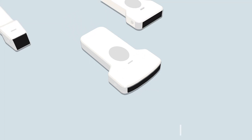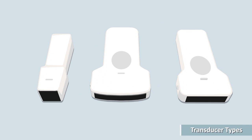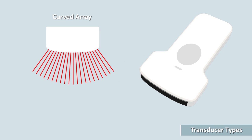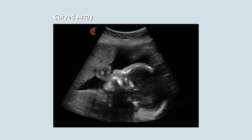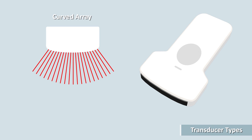In this video we will discuss the three most popular types of transducers. The active elements of a curved array or convex array transducer are arranged in a curved line. This creates a sector shape image and the large face or aperture produces a wide near field image. You will see a broad view near the transducer surface and deeper within the body. This makes curved array transducers popular for scanning the abdomen or fetus where a large field of view is important.